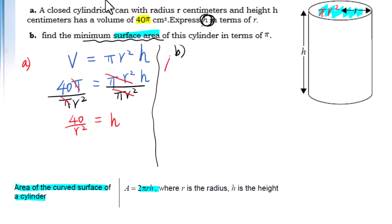So basically the total surface area equals 2πrh plus 2πr². Let's substitute h into this formula, equals 2πr times 40/r² plus 2πr². Then reduce.